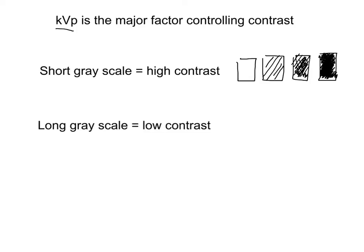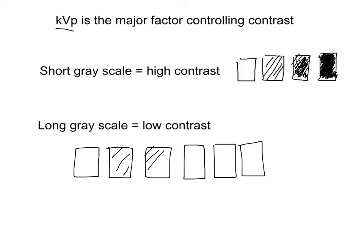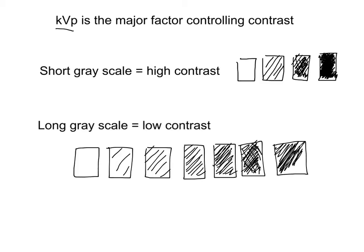If we're talking about a long grayscale or low contrast, now we're going to have a lot more pixels we're talking about, because we're going to have a lot more steps between white and black. So from there we might go like that, and then like that, and with a little bit more density, and then a little bit more density, and a little bit more density. And we might have to keep on going because it's just such a long scale.